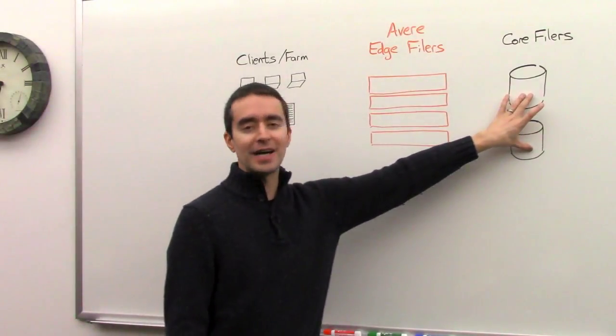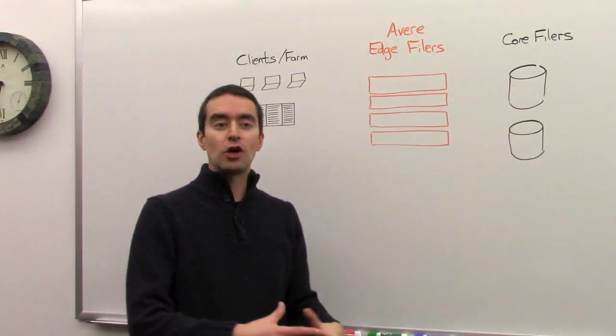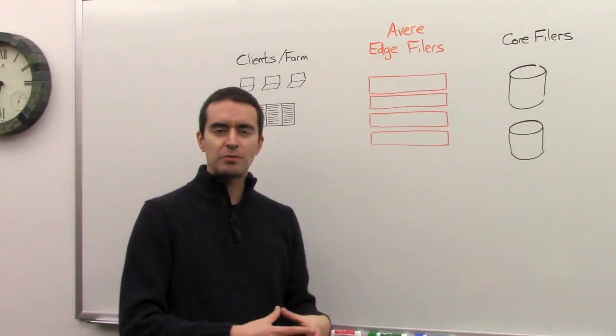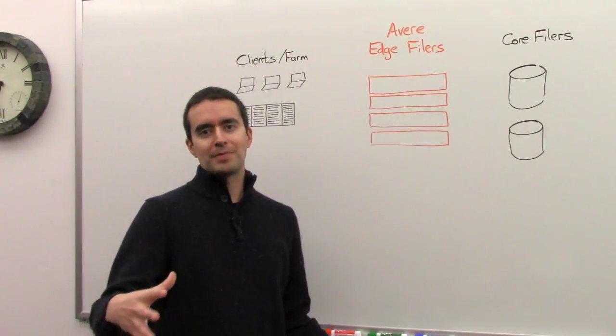So we have our core filers. We think about having this large place where we can store data, usually like a NetApp or an Isilon that's able to take large and large amounts of data.